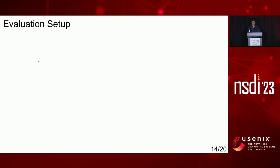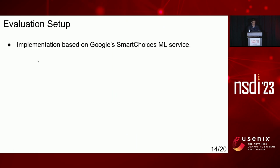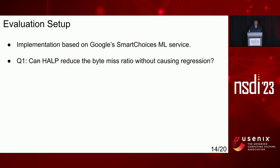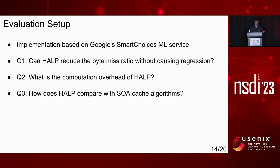Now let's talk about evaluation. HELP's implementation is based on Smart Choices, a Google productionized machine learning service. We ask three evaluation questions: First, can HELP reduce the current production byte miss ratio without causing regression? Second, what is the computation overhead of HELP? Third, how does HELP compare with the state-of-the-art cache algorithms?